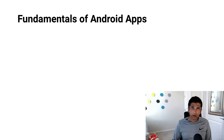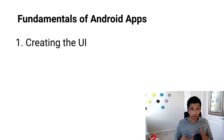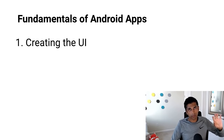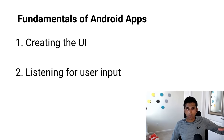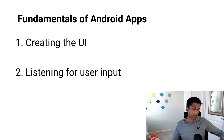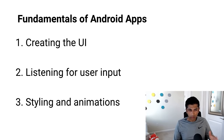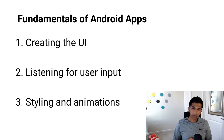The concepts we cover in the tip calculator are fundamental to every Android app. First is creating the UI — every app needs a user interface, and the core component we'll leverage is a constraint layout, which will contain other widgets like the text view or the seek bar for the tip percentage. Second, every interesting Android app listens and reacts to user input. We have two ways of inputting data: entering the base amount and the tip percentage. Third, we'll barely scratch the surface of styling and animation — I'll show you how to update colors and do an animation with the tip description, changing its color dynamically.